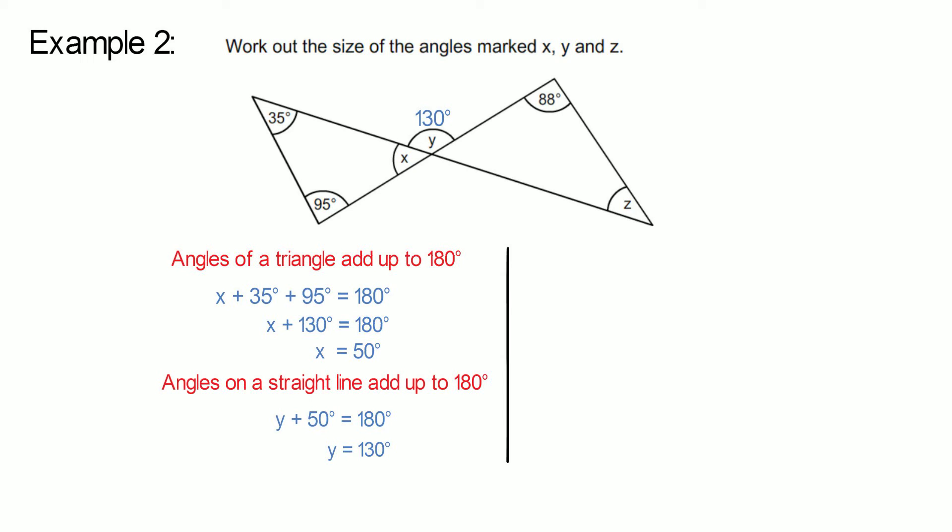To work out the value of Z, we will look at the triangle on the right. The exterior angle of a triangle equals the sum of the opposite interior angles. Therefore, 130 degrees equals 88 degrees plus Z. Z is therefore 42 degrees.